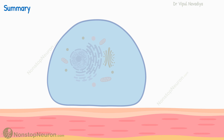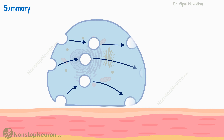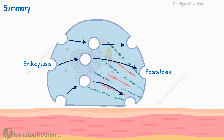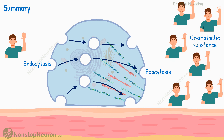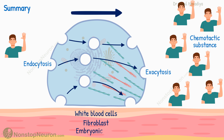Let's have a quick summary. In amoeboid movement, the cell membrane is transported from the rear end of the cell to the leading end by continuous endocytosis at the rear end and exocytosis at the leading end. The pseudopodium thus formed pulls the remaining cell body, moving the entire cell. Its direction is guided by chemotactic substances, and usually the cell moves in the direction where the concentration of the chemotactic substance is higher. The cells in the body showing amoeboid movement are white blood cells, fibroblasts, embryonic cells, etc.